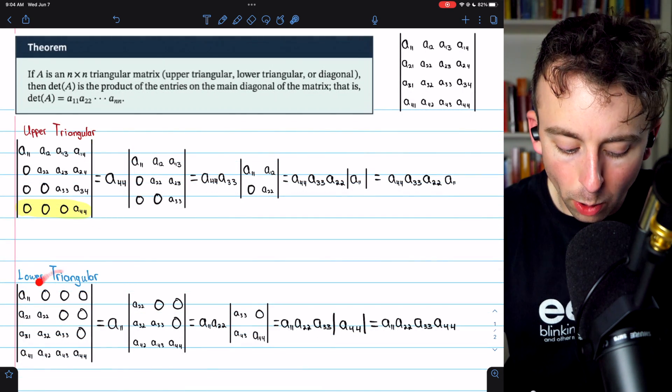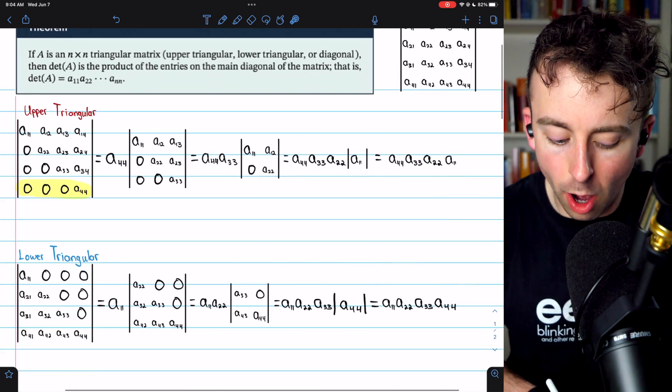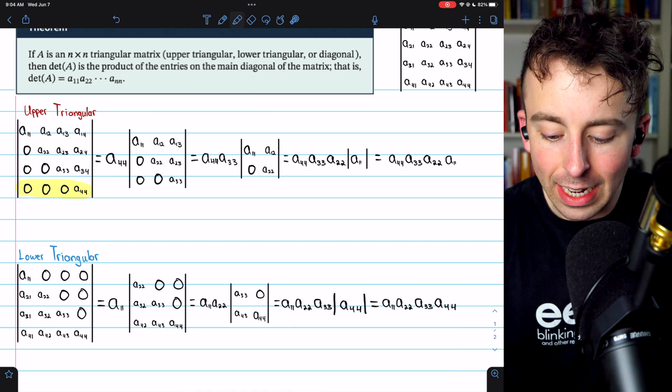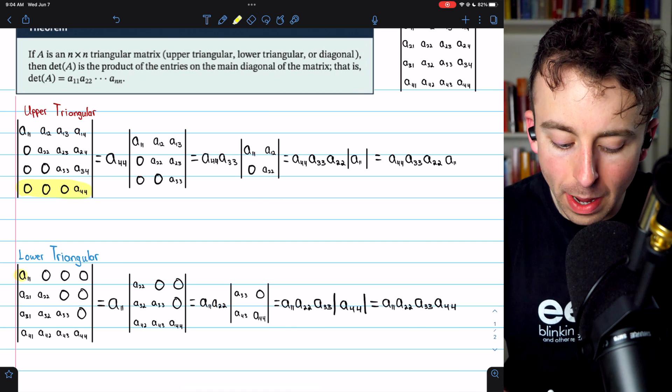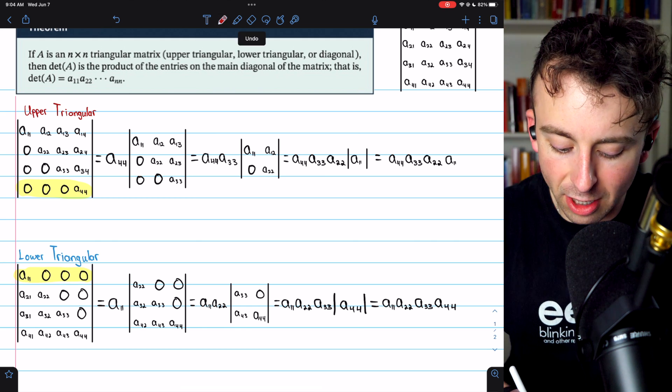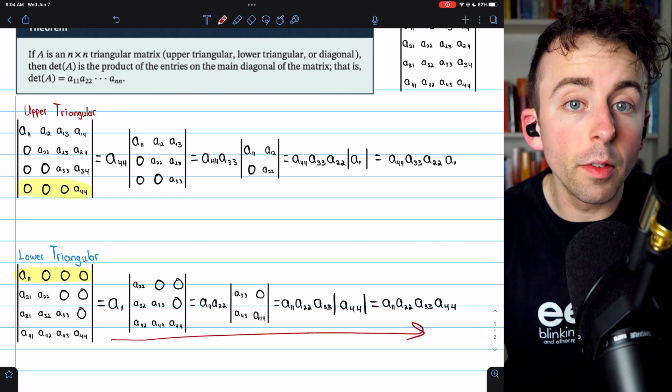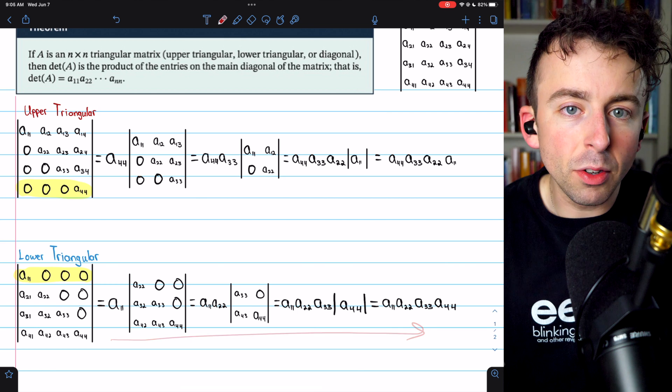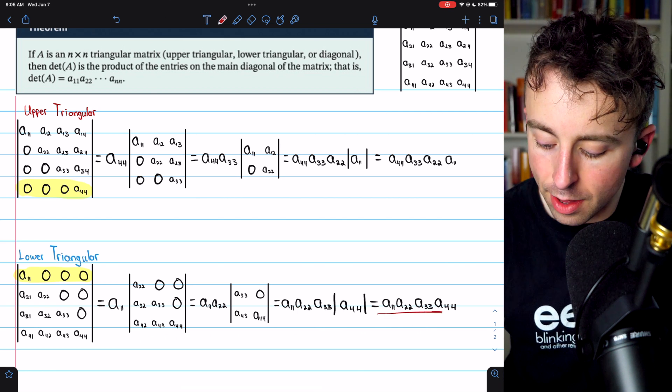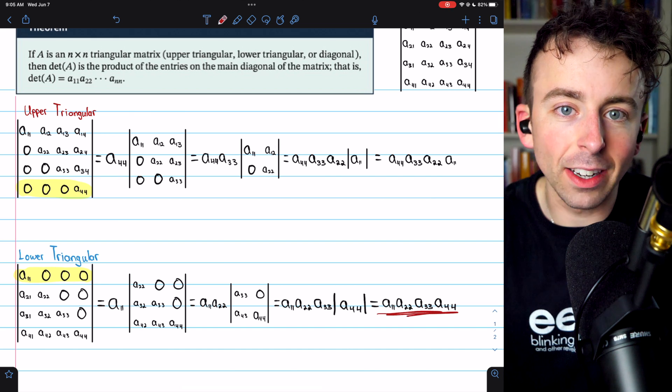And here is more or less the same exact process written out for a lower triangular matrix. In this case, we use a cofactor expansion of the top row because that's the one with the most zeros. And this proceeds in very much the same way. As you can see, the only entries that actually come into the computation here end up being the entries that are on the main diagonal.